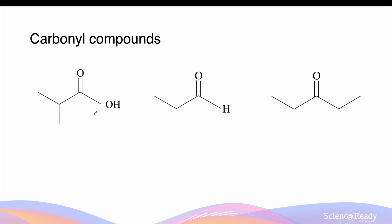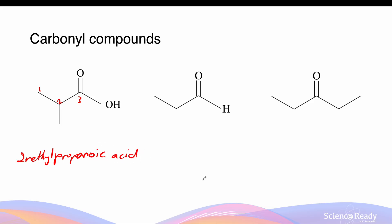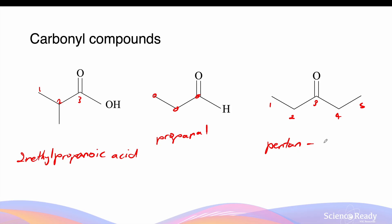Our first carbonyl compound we should recognise as a carboxylic acid functional group. The maximum chain length of this is 1, 2, 3. Since the methyl group exists on carbon number 2, this is going to be called 2-methyl-propanoic acid. Next to this one is the aldehyde propanal, because the longest chain length is 3. Finally, we have a ketone on carbon number 3 out of 1, 2, 3, 4, 5. This is going to be called pentan-3-one.